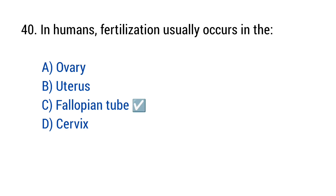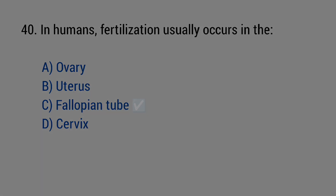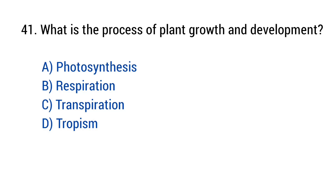Question number 41. What is the process of plant growth and development? The right answer is option D: Tropism.